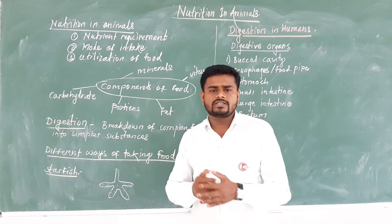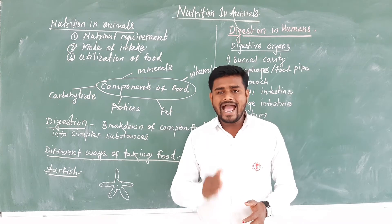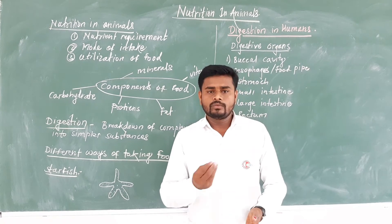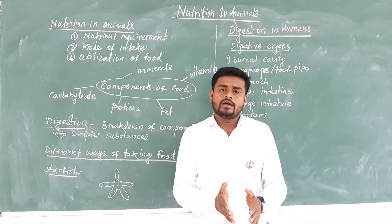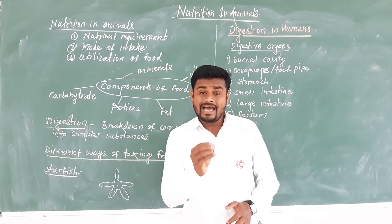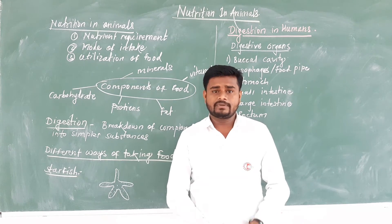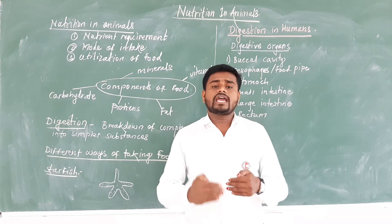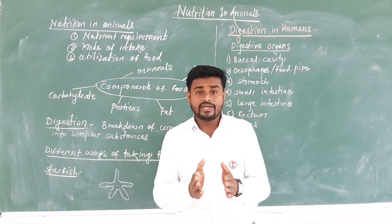How does the process of digestion take place in human beings? Which organs are important for the digestion of food in the human body? We know that human beings take in food with the help of the mouth. In the human body, there are several systems to carry out specific functions — for example, the digestive system, respiratory system, reproductive system, and blood circulatory system. For the process of digestion, the digestive system is present in the human body.